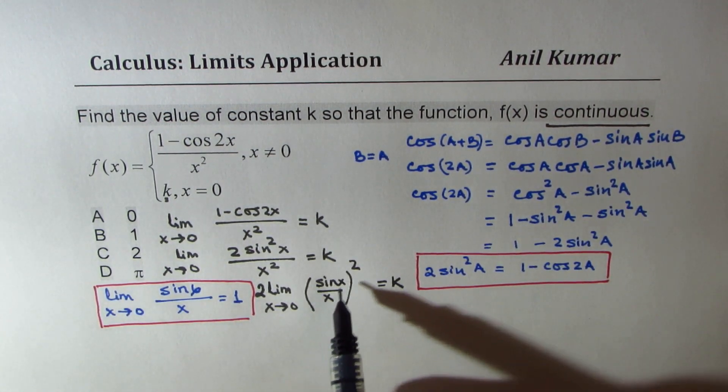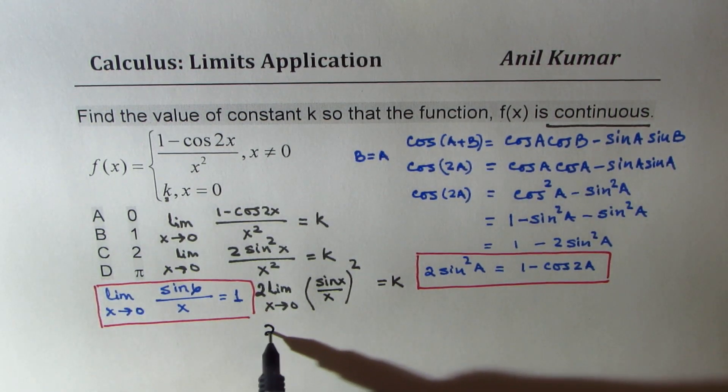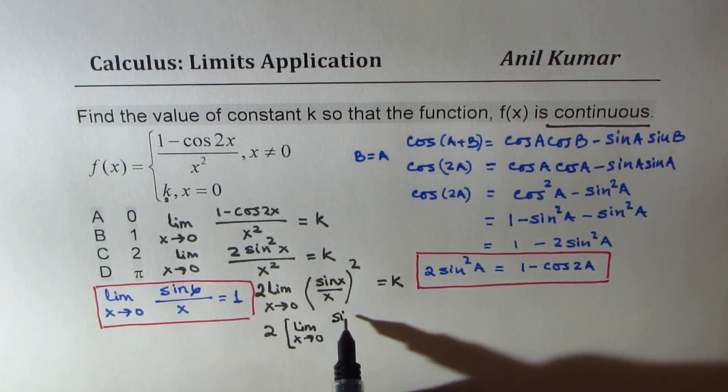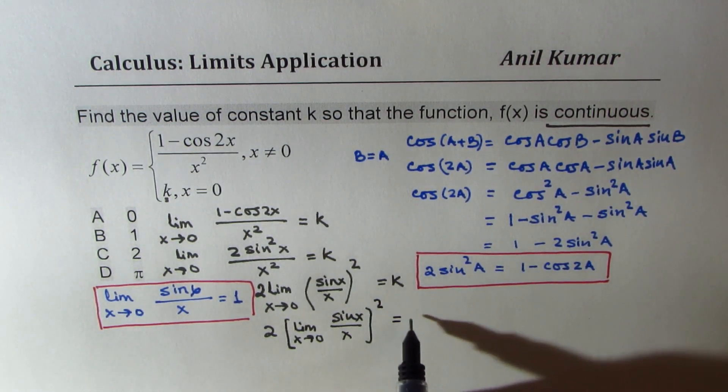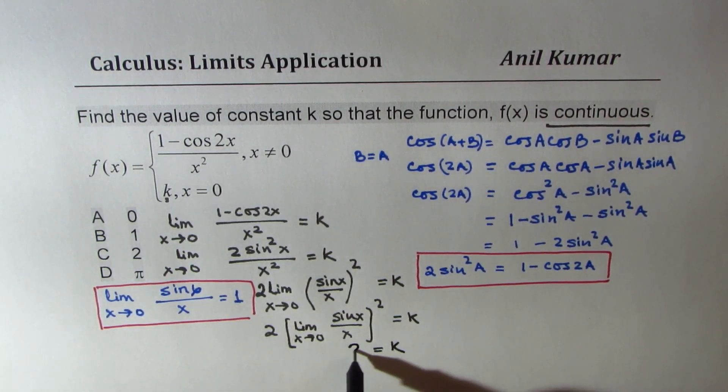Now, limit of sin x over x is, we know, 1. So now we could write this as 2, limit x approaches 0 for sin x over x whole squared. That should be the value of k. This is 1, so we get that the k value should be 2.